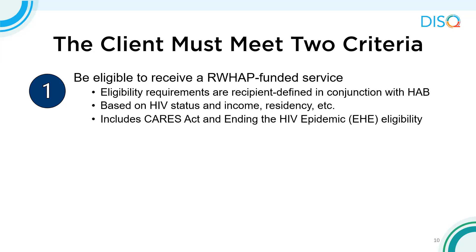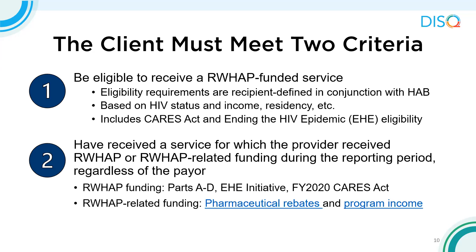This year, please note that if you received ending the HIV epidemic initiative funding, EHE eligible clients should also be included in your client level data file. This is important because EHE does have different eligibility requirements than the Ryan White Program. The second criterion is that the client must have received a service that the provider funds with Ryan White or Ryan White related funding. For RSR reporting purposes, funding from CARES Act or EHE is considered Ryan White funding. Ryan White related funding means services funded with pharmaceutical rebates and program income.